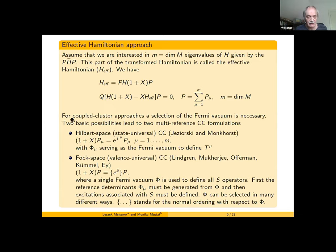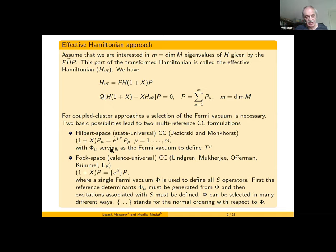Let me now introduce the coupled cluster expansion for the 1+X operator. We have two possibilities associated with different choices for the Fermi vacuum. The Hilbert space approach introduced by Jeziorski and Monkhorst has cluster operators that are reference-function dependent — so we have many different Fermi vacuums. The Fock space valence-universal approach uses one Fermi vacuum.